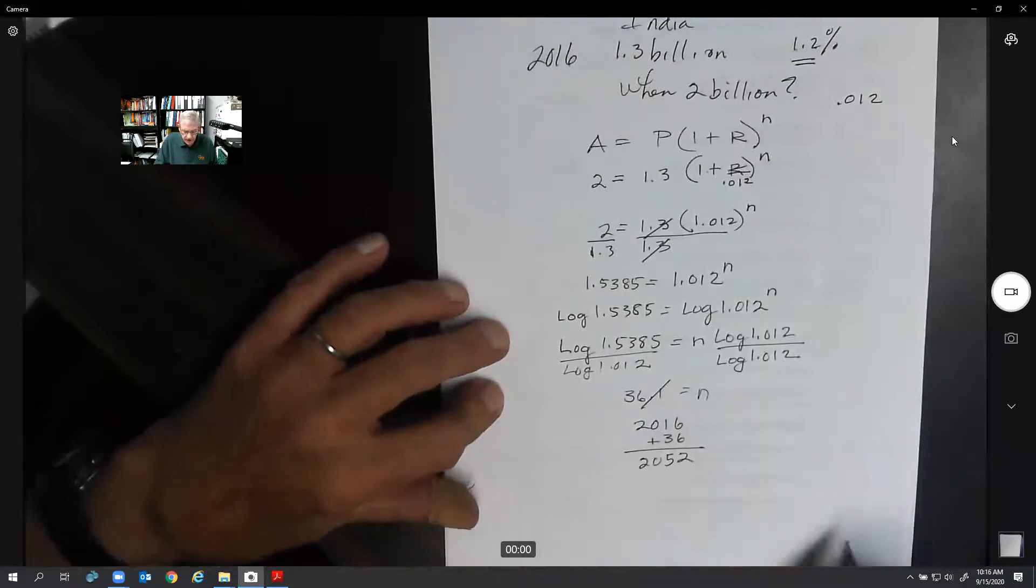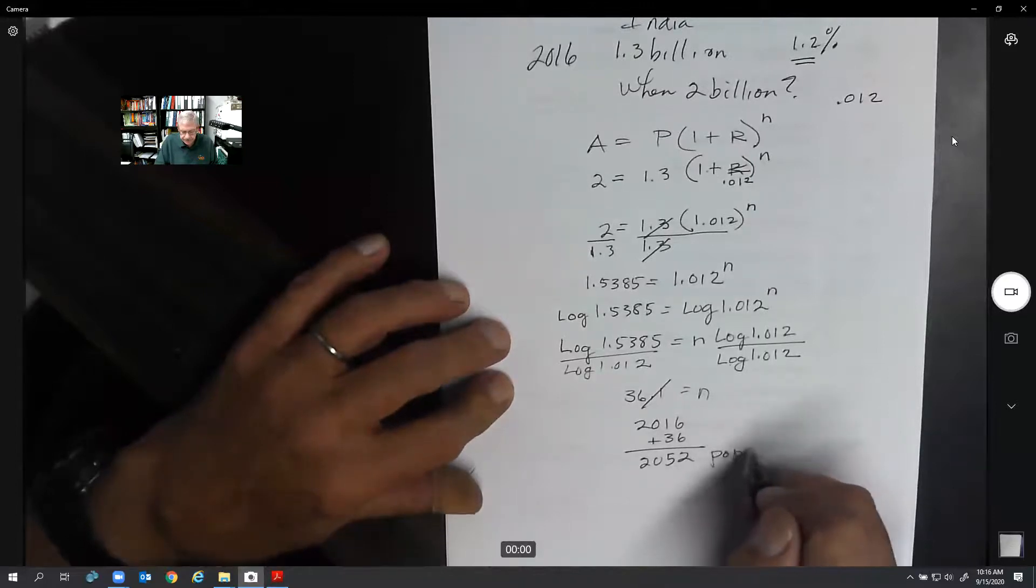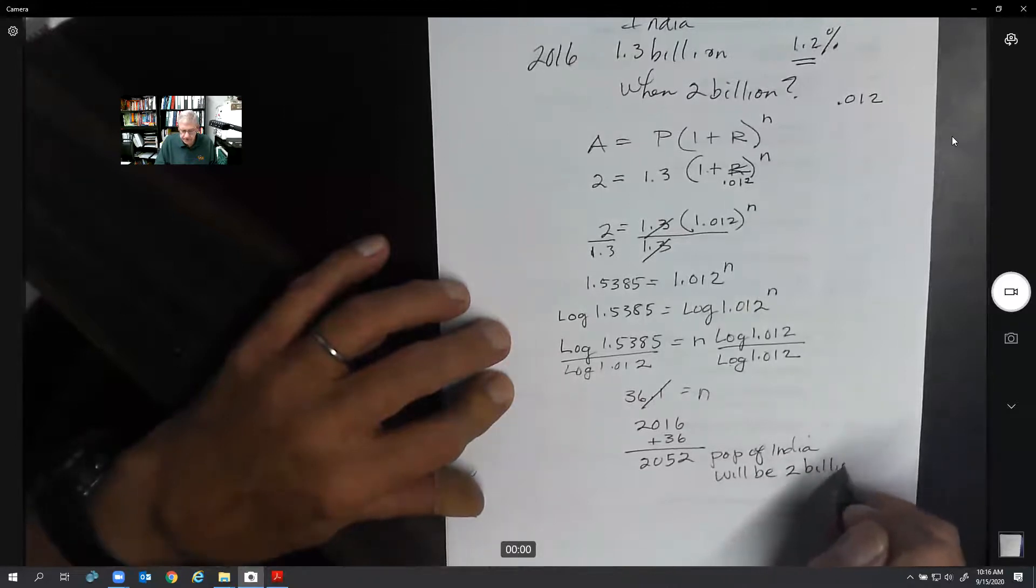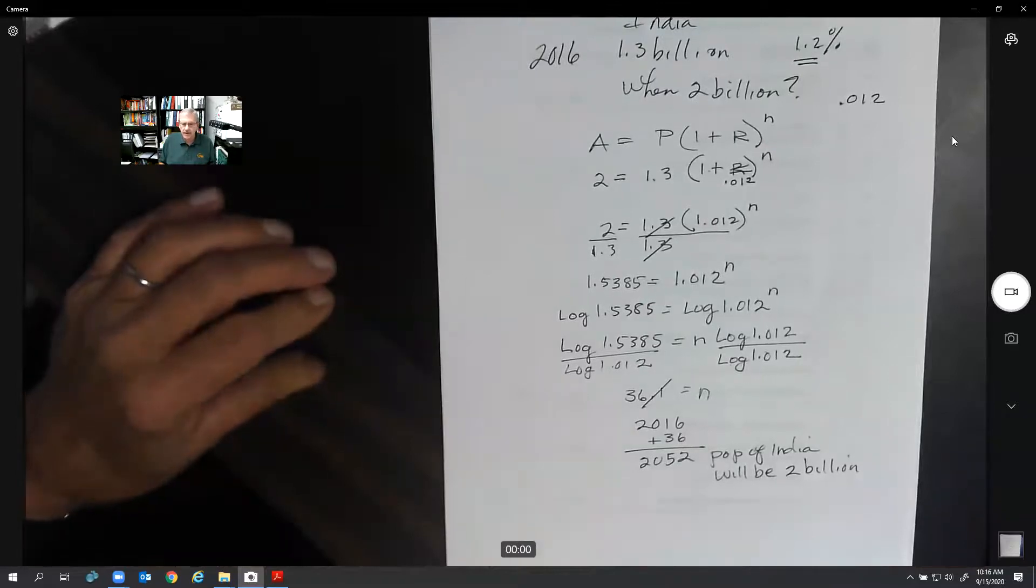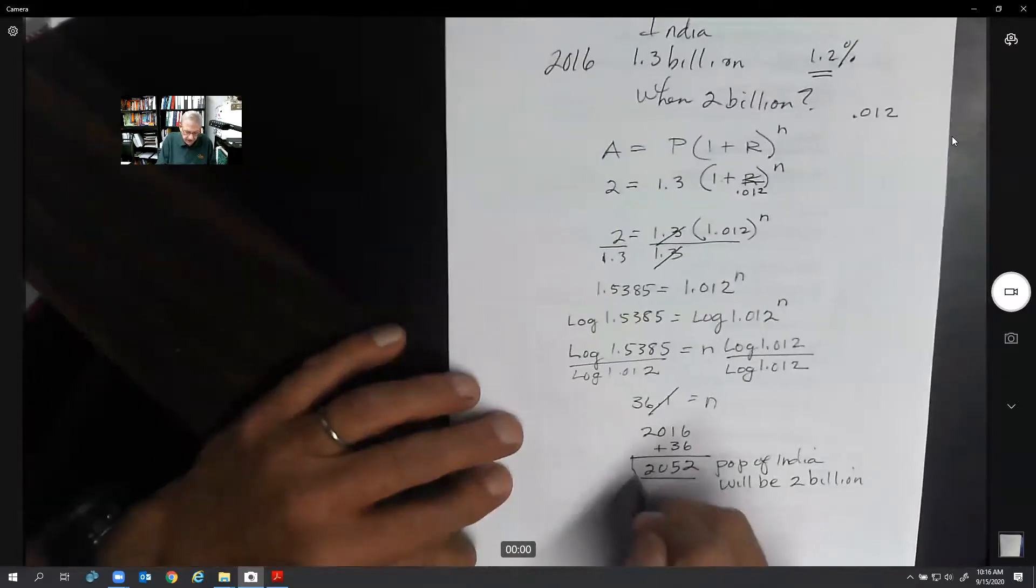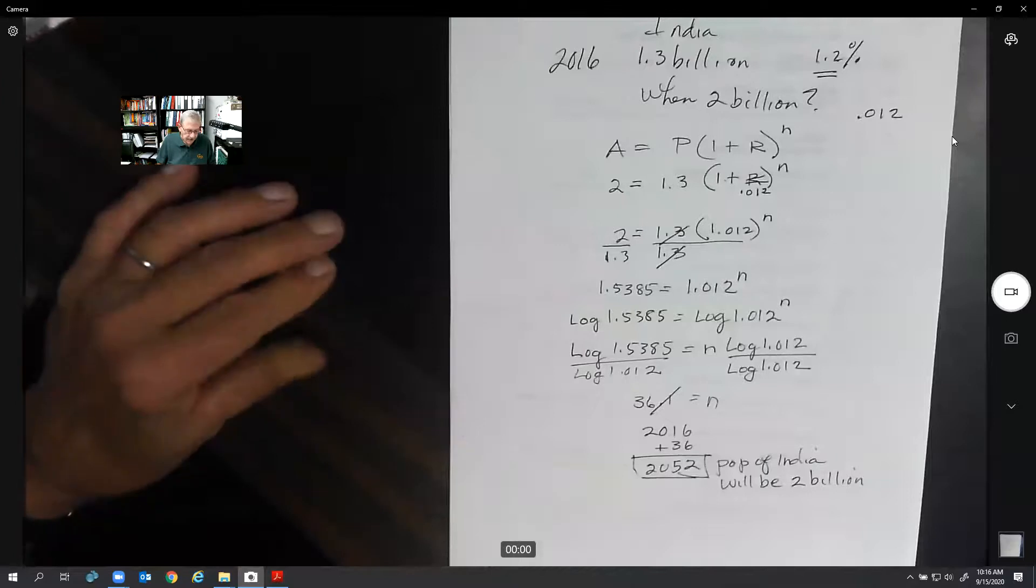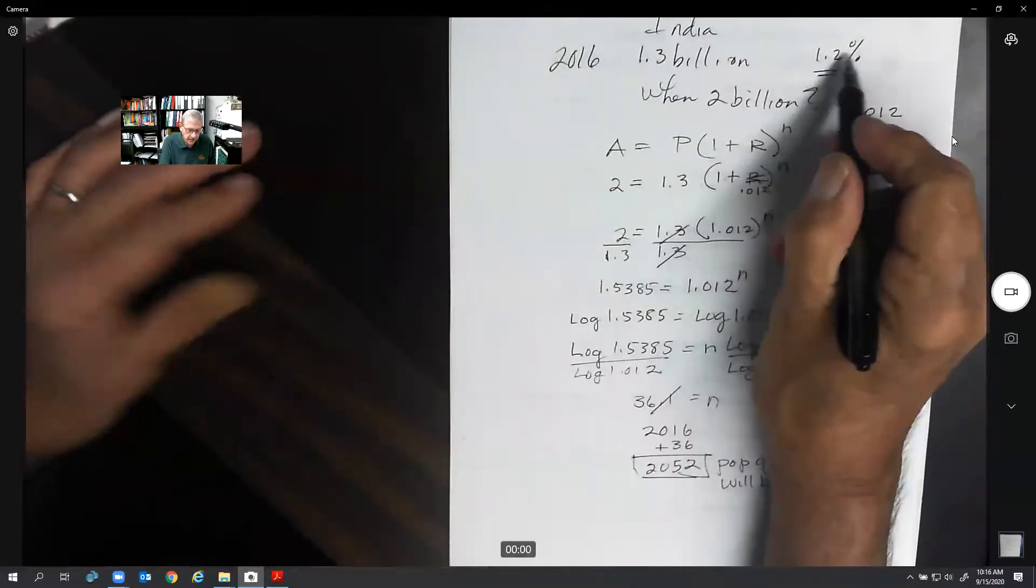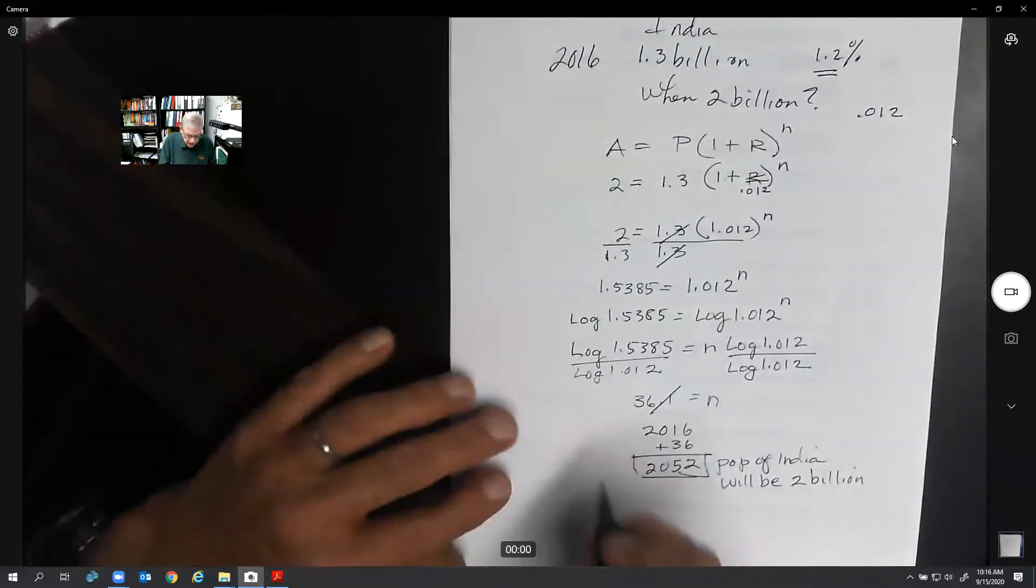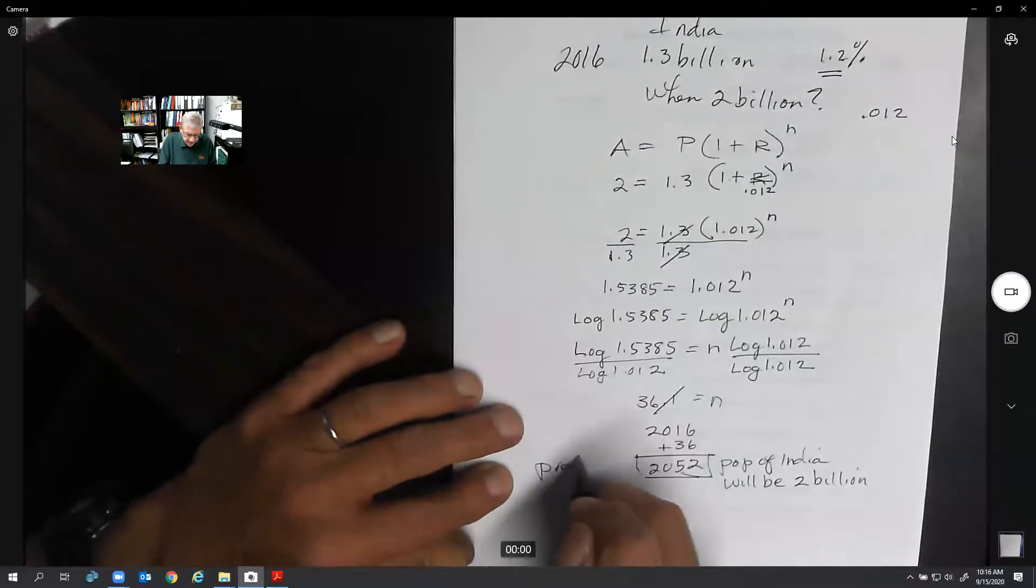In 2052, the population of India will be approximately 2 billion people. It should be 2052 or around there. If this holds up. Maybe to see what the trouble is with growth rate. It might go down. It might go up. So it's just a prediction. It's not set in stone.